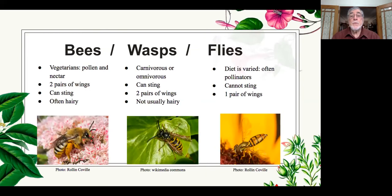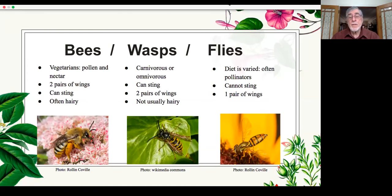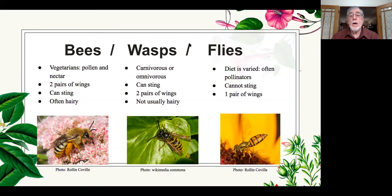Bees, wasps, and flies — what are some of the differences? Bees have two pairs of wings. They evolved from wasps years ago. Wasps, of course, also have two pairs of wings and they can sting, but they're not really interested in plants — they're carnivores. Bees are vegetarians, which is a real major distinction. Flies have only one pair of wings, so that's one thing you can use to distinguish them.